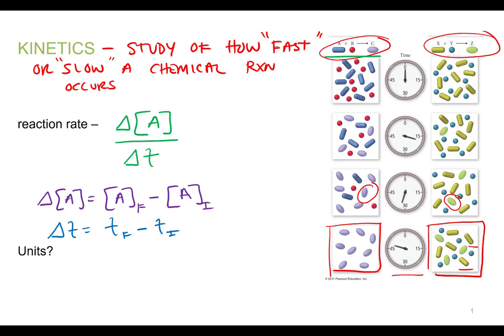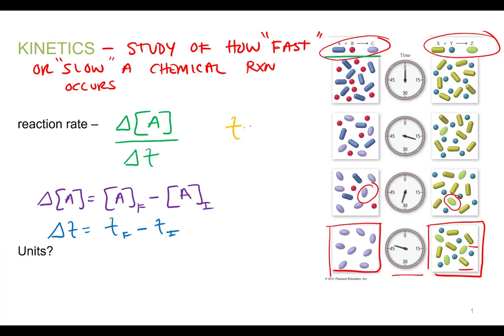We're also going to be talking about temperature quite a bit in kinetics, so to differentiate: when we write lowercase t, we're referring to time, and when we write uppercase T, we're referring to temperature. The units for the reaction rate — change in concentration over change in time — use molarity for concentration. Since most reactions react pretty fast, we usually use seconds for time, so our units for reaction rate would be molarity per second.